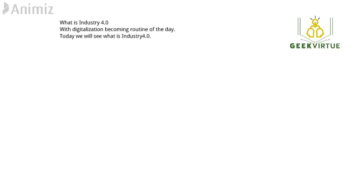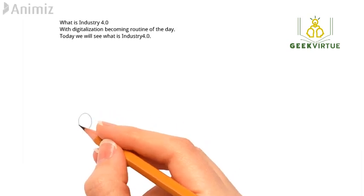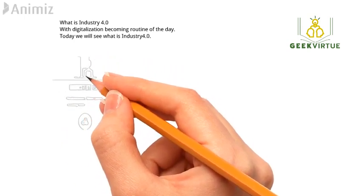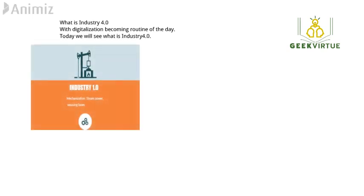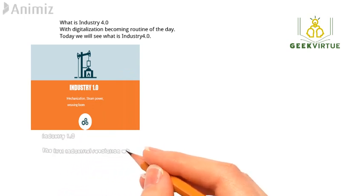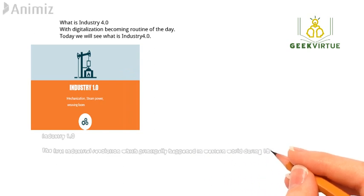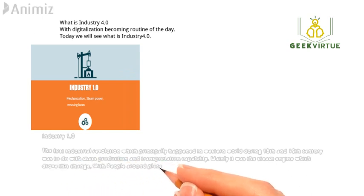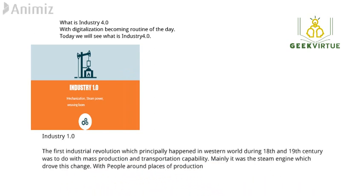Let's start from Industry 1.0 through to 4.0. The Industry 1.0 revolution happened in the 17th, 18th, and into the 19th century, and was to do with mass production. It gained momentum during the World War period. It was driven by the steam engine, along with the concentration of people and places of production.